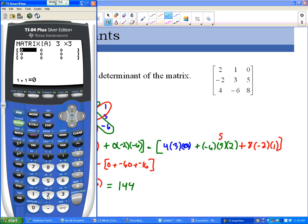starting with the first row I put in two, enter, one, enter, zero, enter, and then negative two, enter, three, enter, five, enter, four, enter, negative six, enter, eight, enter. It's always a good idea to stop for a second once you're done entering it and check to make sure you put in everything right, because if you didn't then you're gonna get something that's not the correct answer.